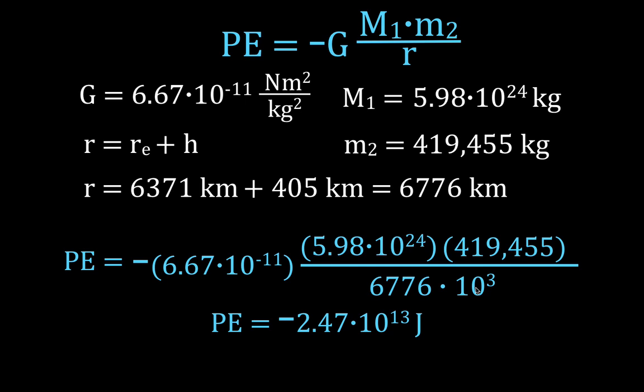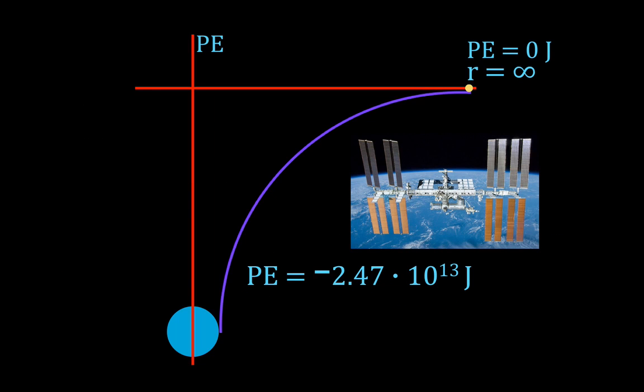Now, I do want to say quickly something about why we have a negative sign here. Before I say why we have a negative sign here, I want to say what the negative sign does not mean, and that negative sign does not mean that the potential energy is less than zero. Potential energy, the negative sign really designates that the object is still bound to the Earth.